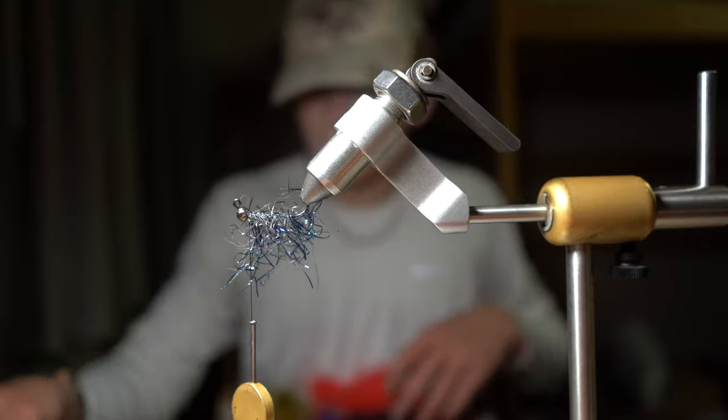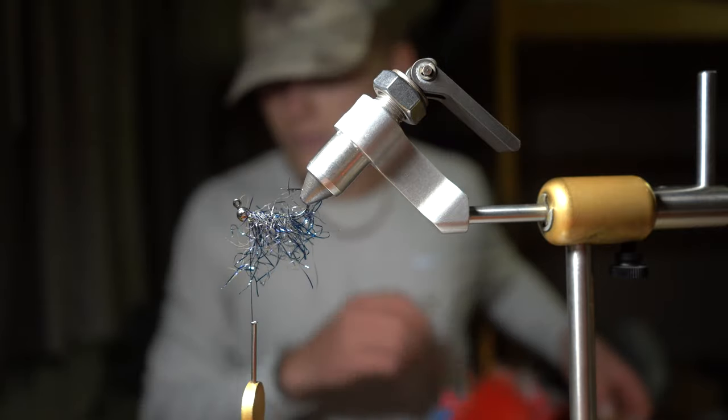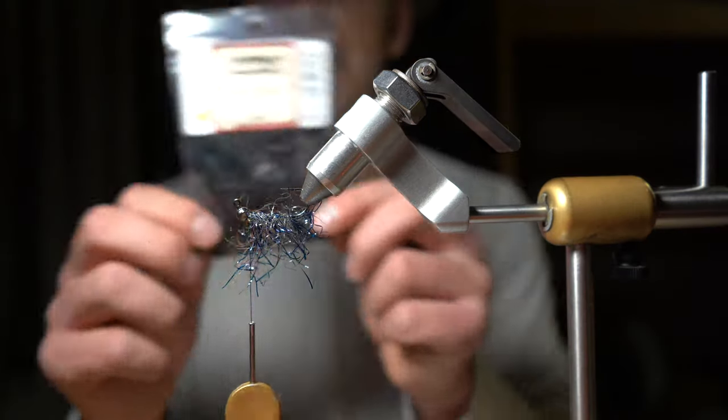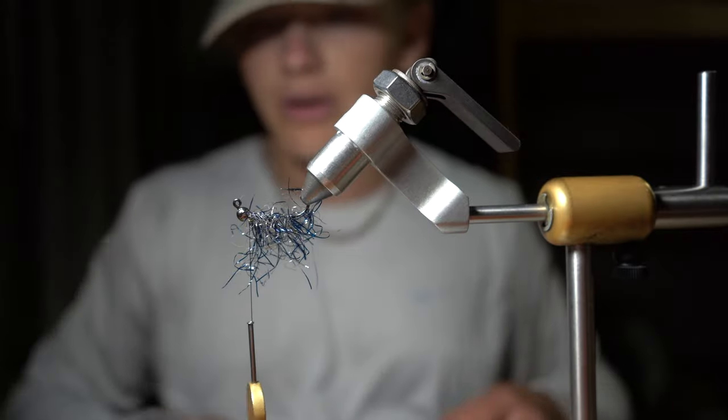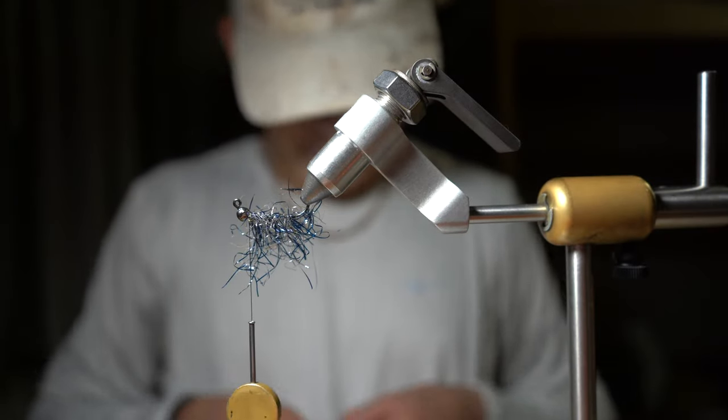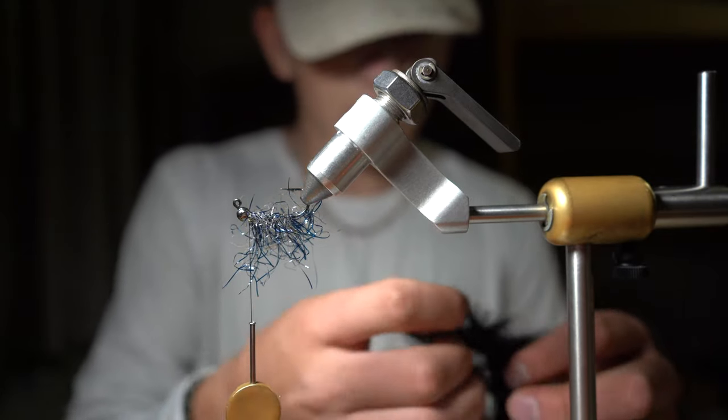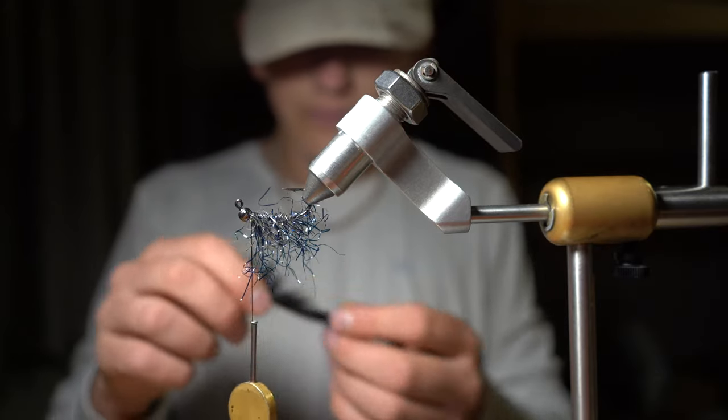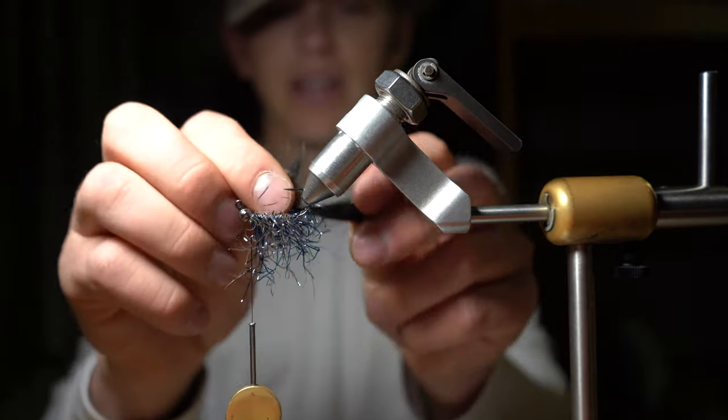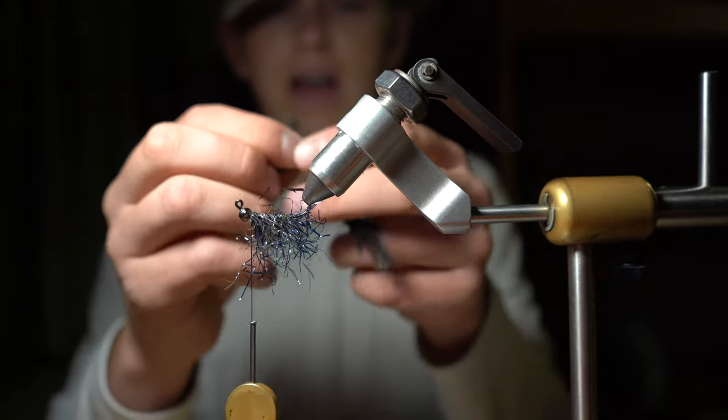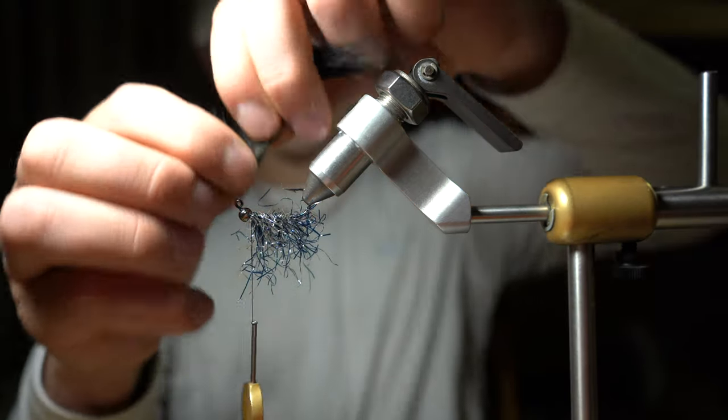After wrapping, we're going to take our black zonker or rabbit strip. Go ahead and size out a tail that you're going to want on the fly. Find your piece.